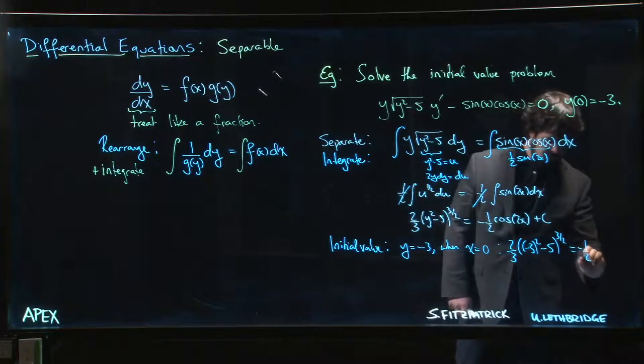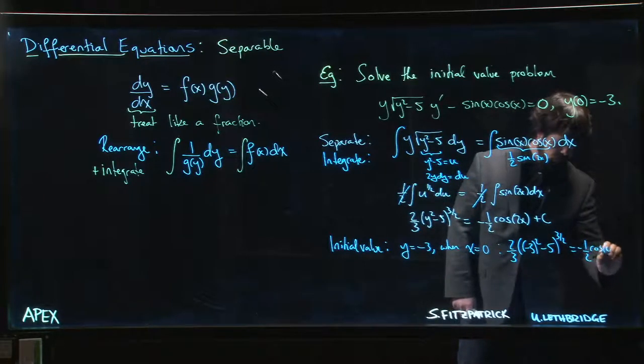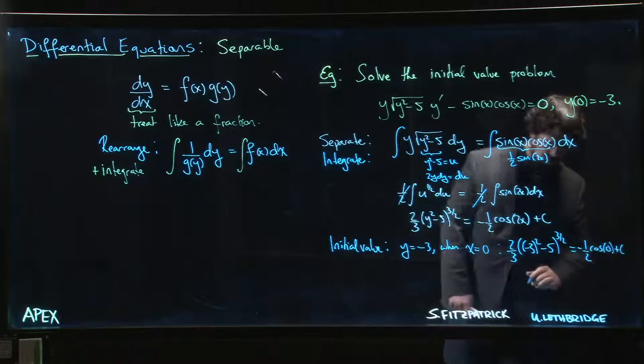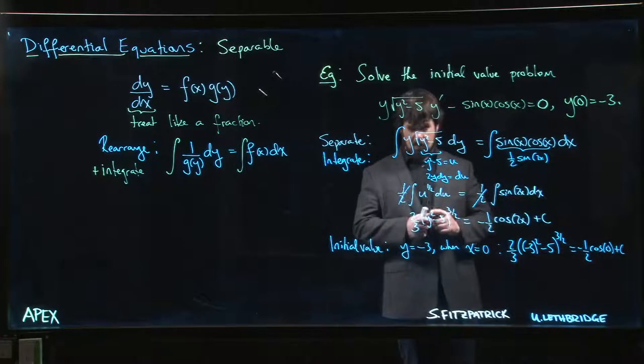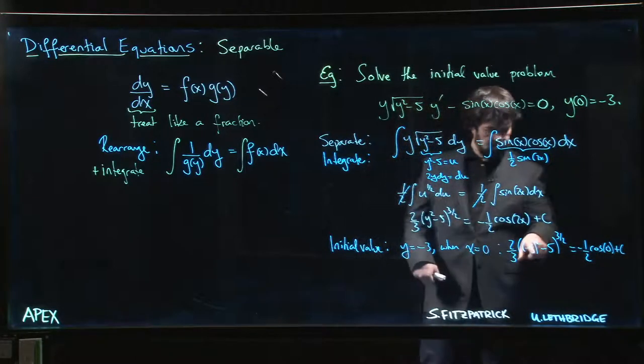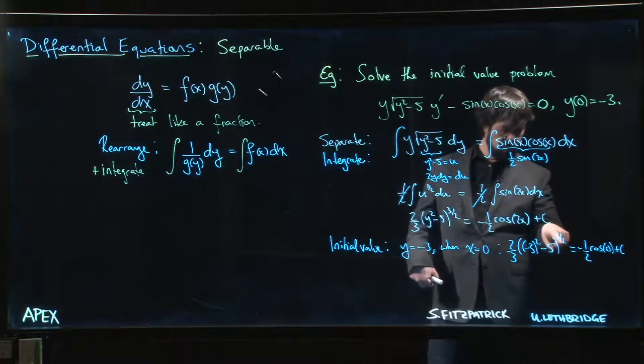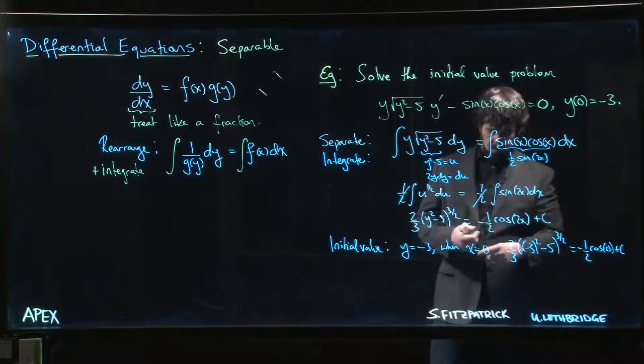Minus one half cos zero plus c. Let's think that through. So three squared is nine, minus five is four, square root of four is two, and then we cube it, we get eight. So this side we have sixteen over three.